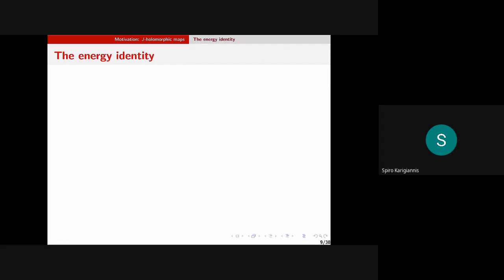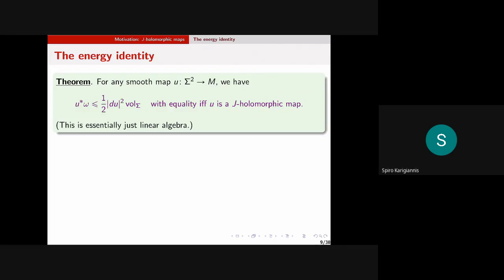There's an energy identity: for any smooth map from sigma to M, pointwise the pullback of omega by u is less than or equal to one-half times norm(du)^2 times vol_sigma. The right-hand side, as a combination of the two independently metric-dependent pieces, is independent of the choice of conformal representative. Equality occurs if and only if u is J-holomorphic. This is essentially the Cauchy-Schwarz and Wirtinger inequalities combined with the fact that omega is a calibration.